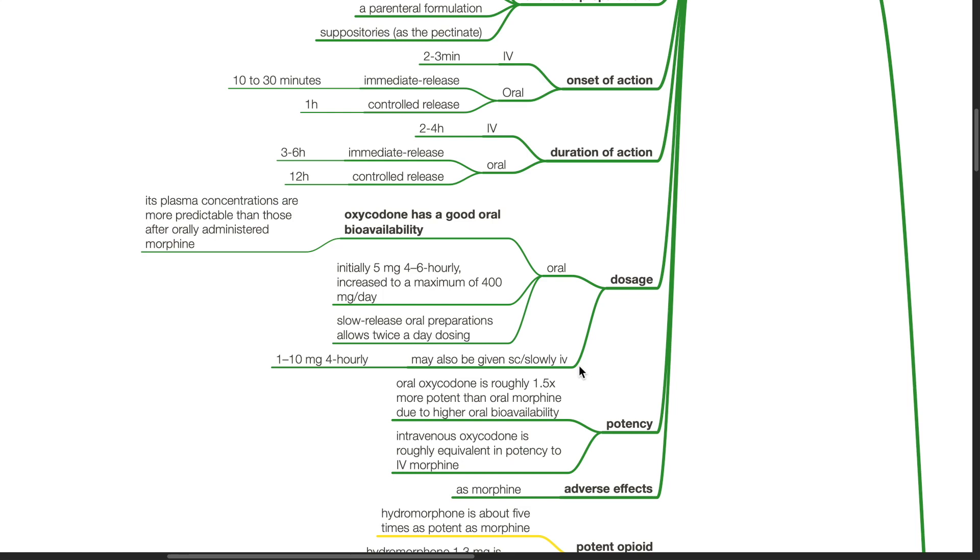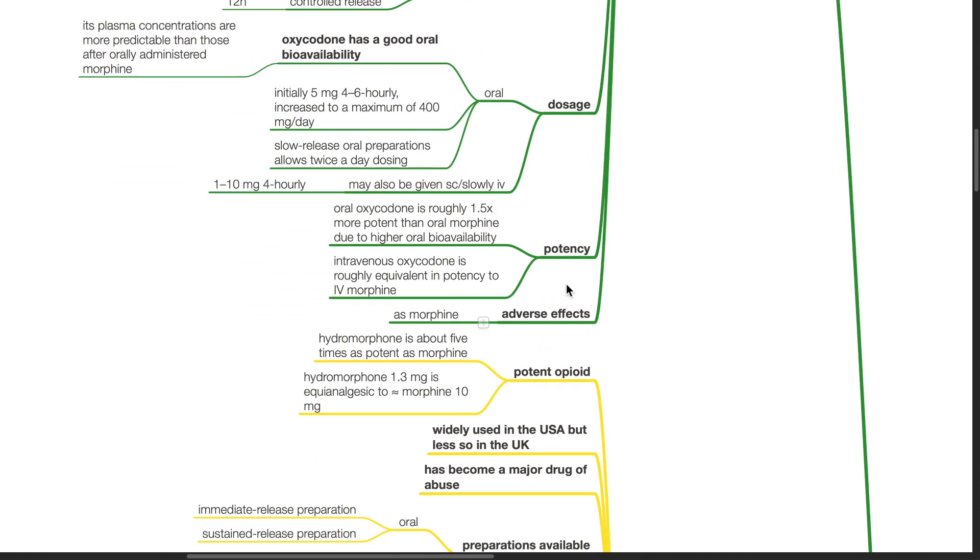Potency. Oral oxycodone is roughly 1.5 times more potent than oral morphine due to higher oral bioavailability. IV oxycodone is roughly equivalent in potency to IV morphine. Adverse effects as morphine.